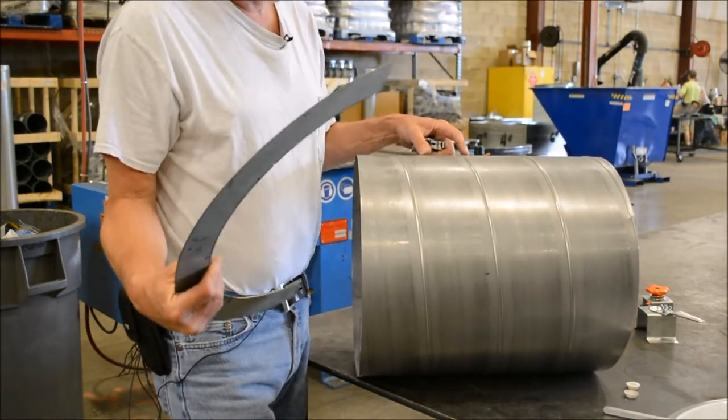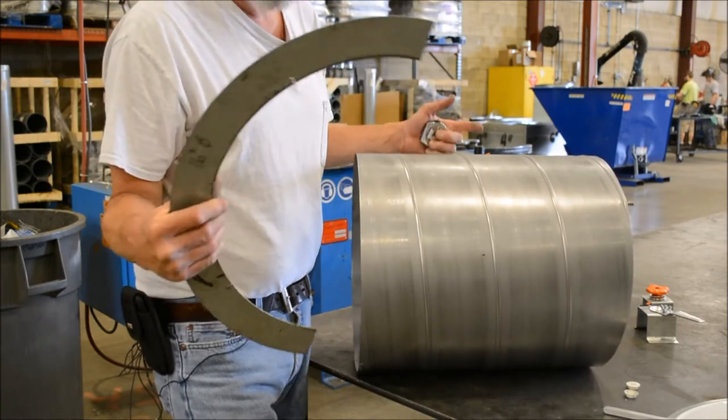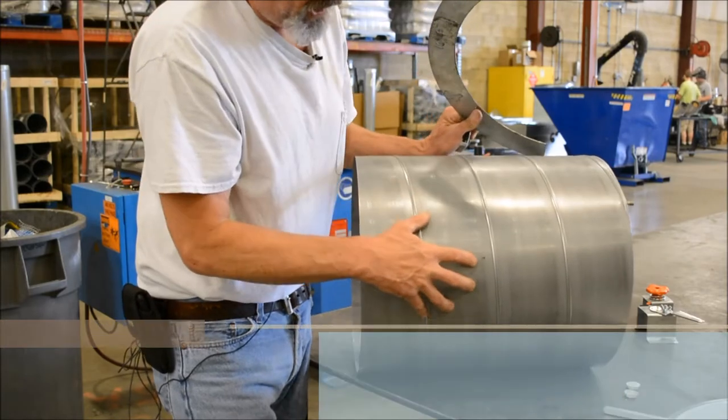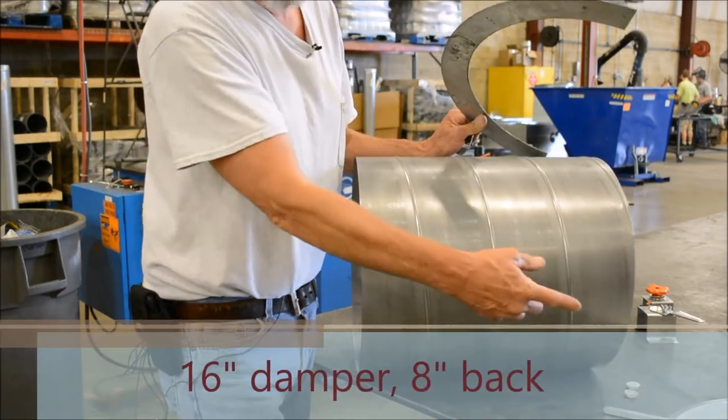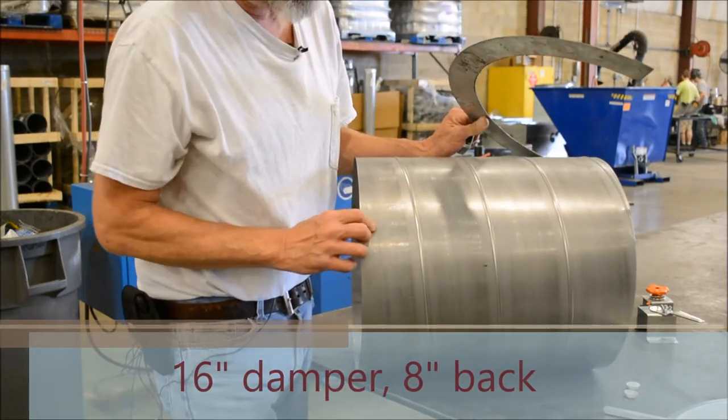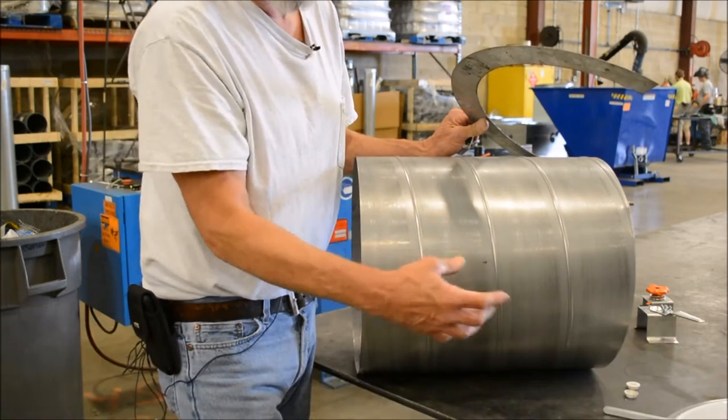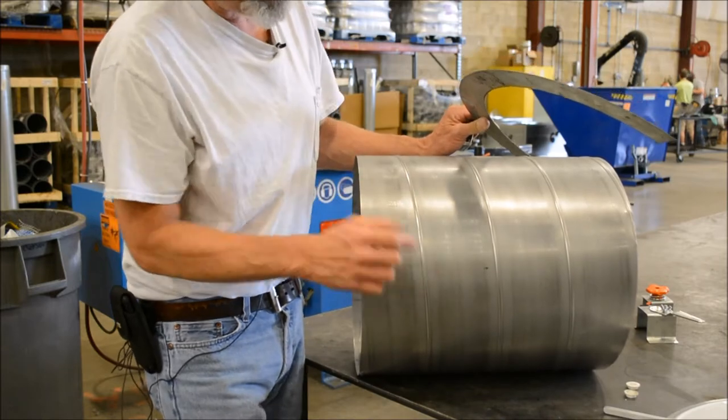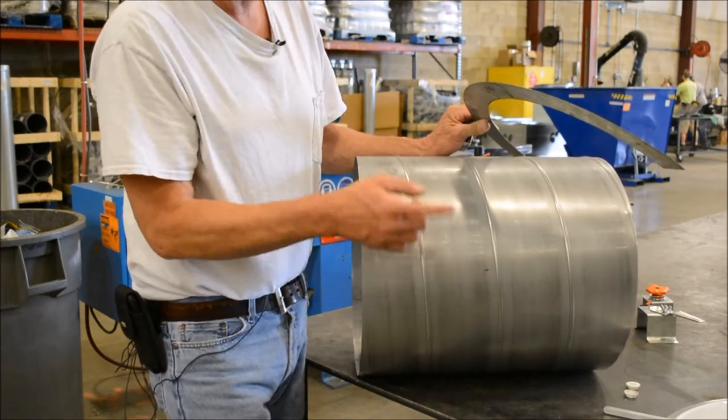piece that we use for installing dampers, gives us a quick mark. I come eight inches back because we got a 16 inch damper, we want to keep that halfway back so that way the blade's not out here in the opening. So what I'm gonna do is mark my pipe, then I'm gonna drill my five-eighth hole.